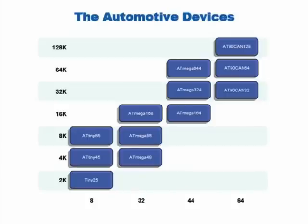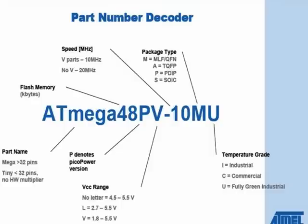There are also devices suitable for automotive applications. The part number naming convention for Atmel AVR products includes: the temperature grade, the package type, and the speed grade — 10 for low-voltage parts and 20 for standard parts. The letter P in the part number denotes a PicoPower device.